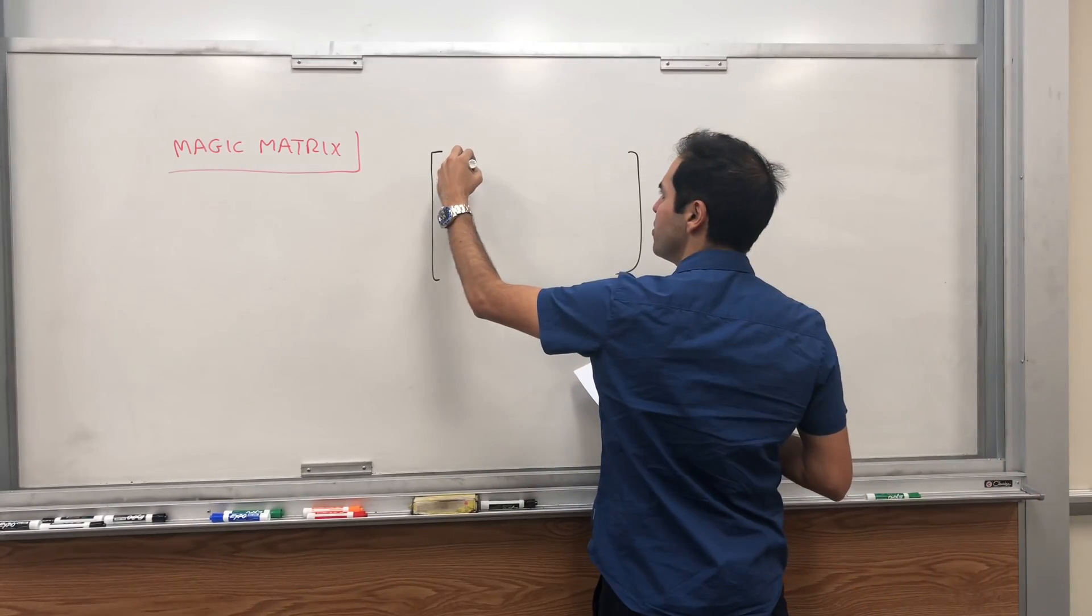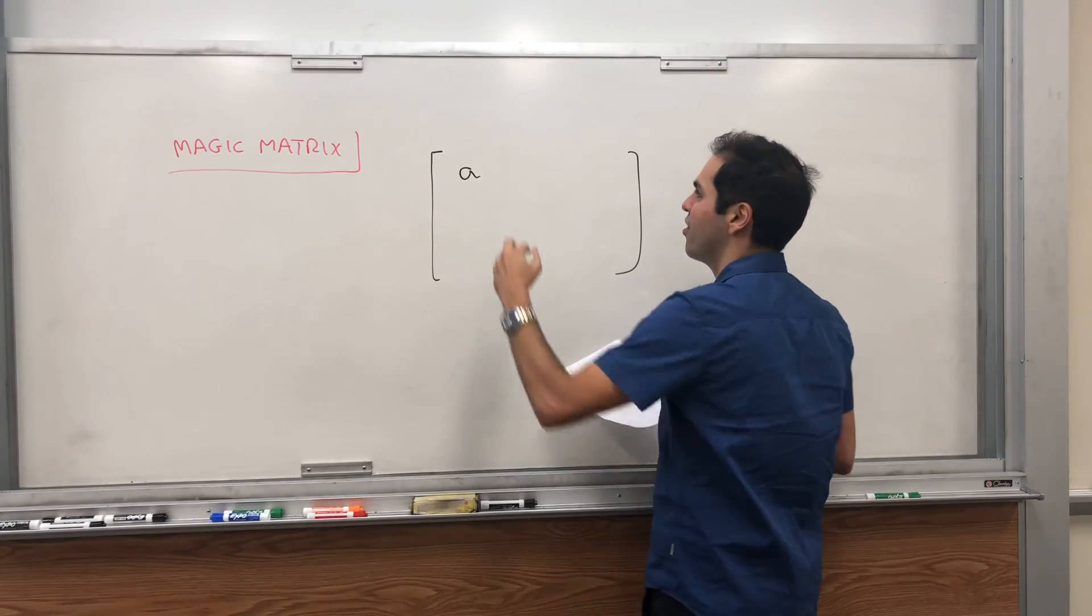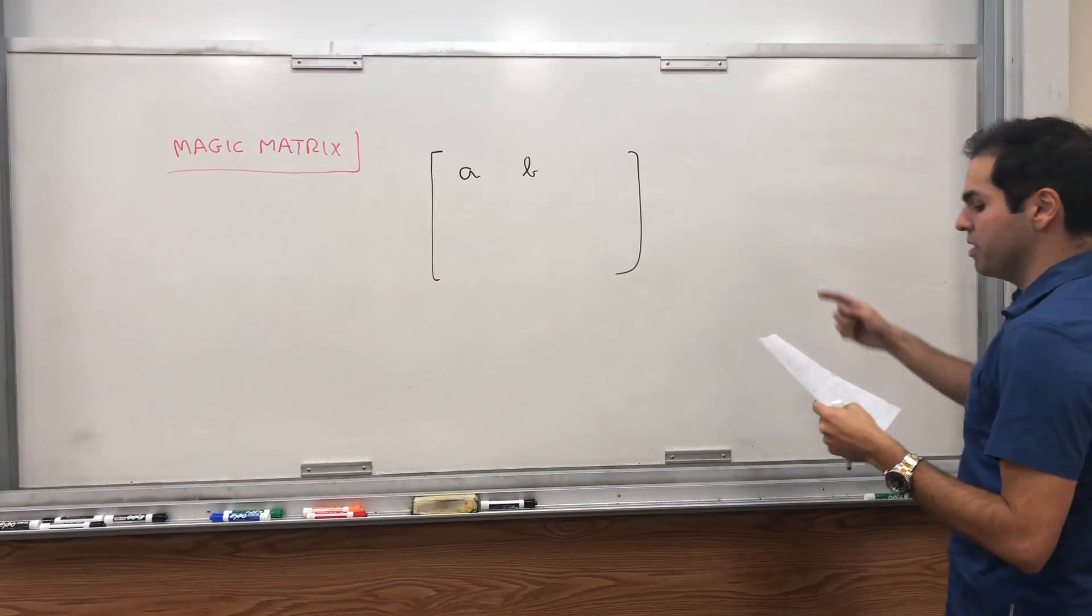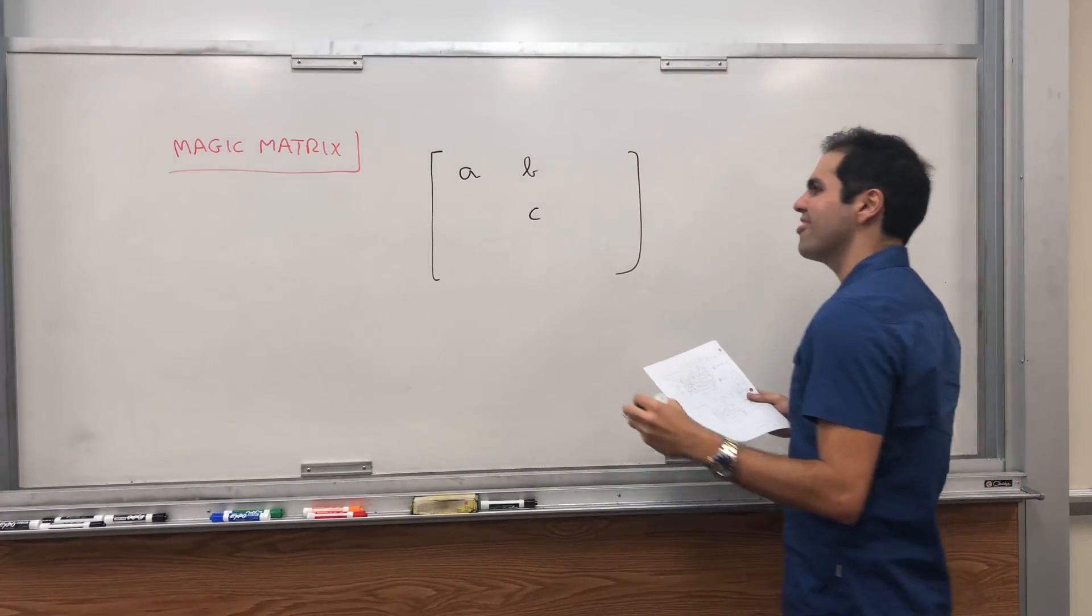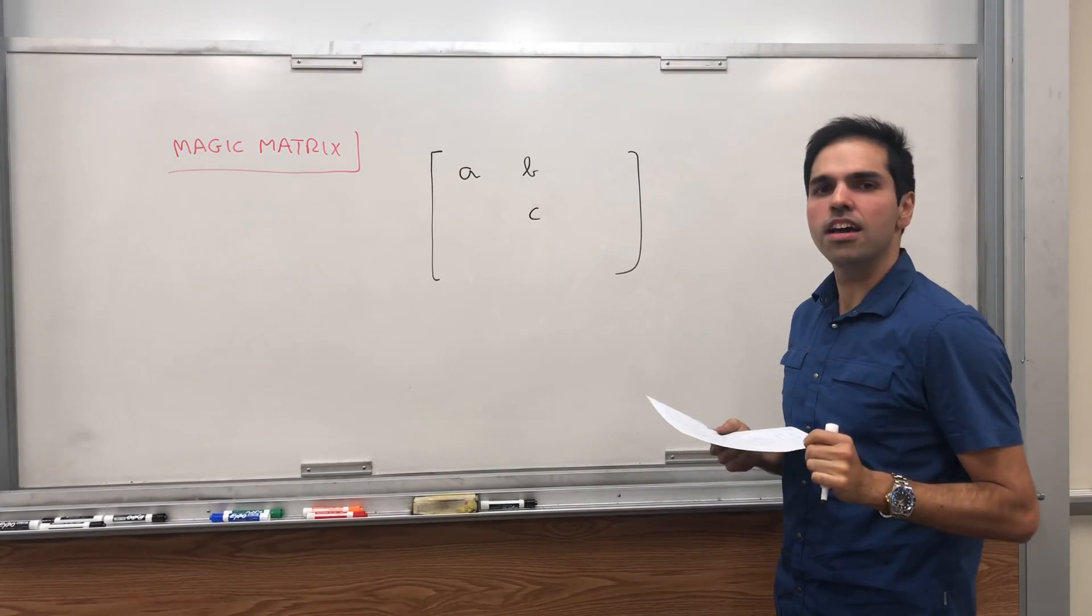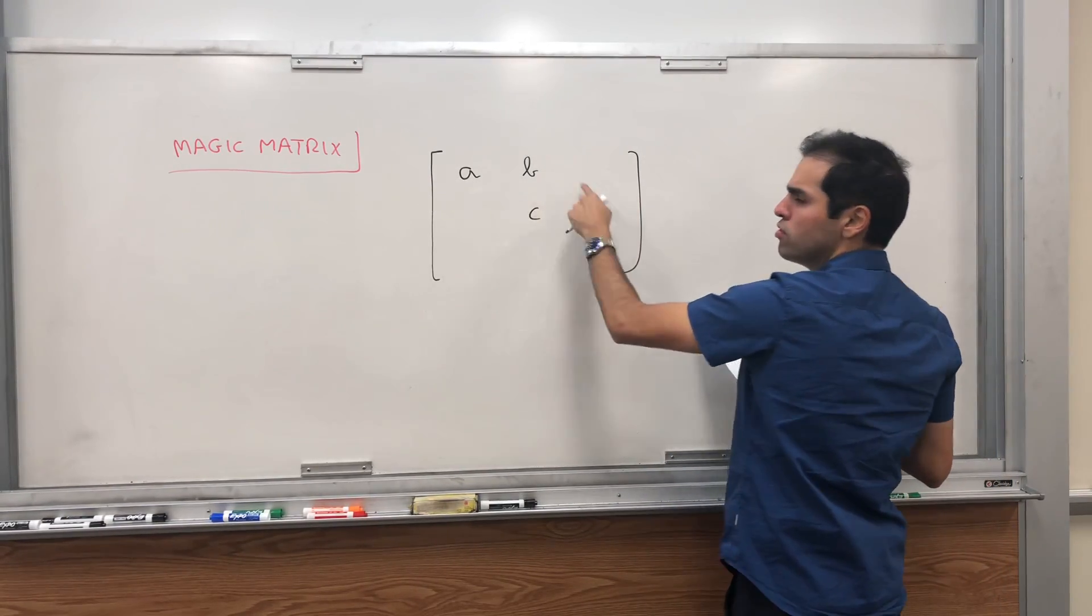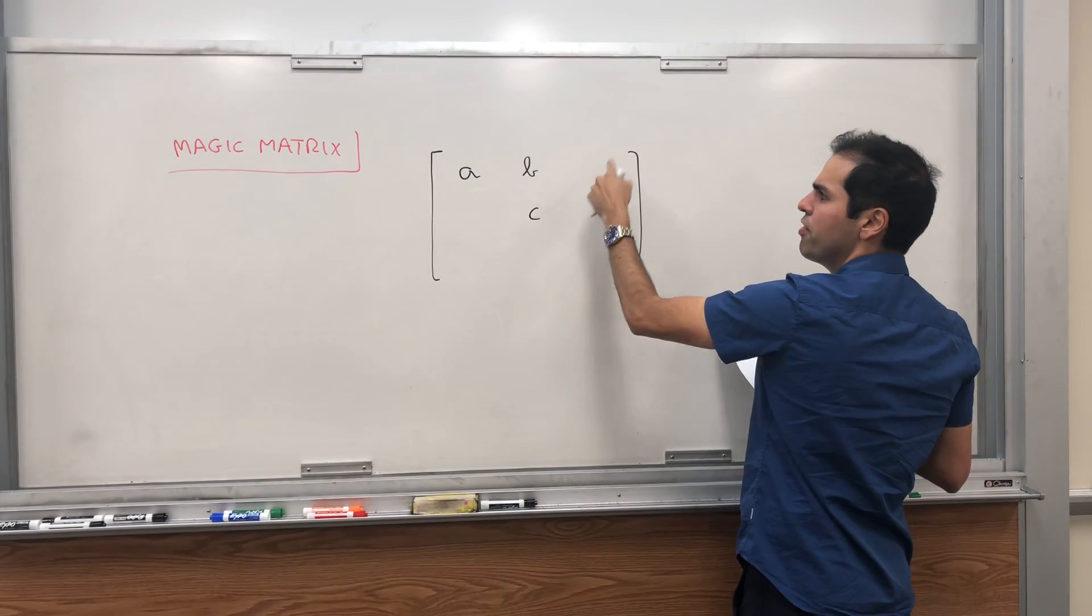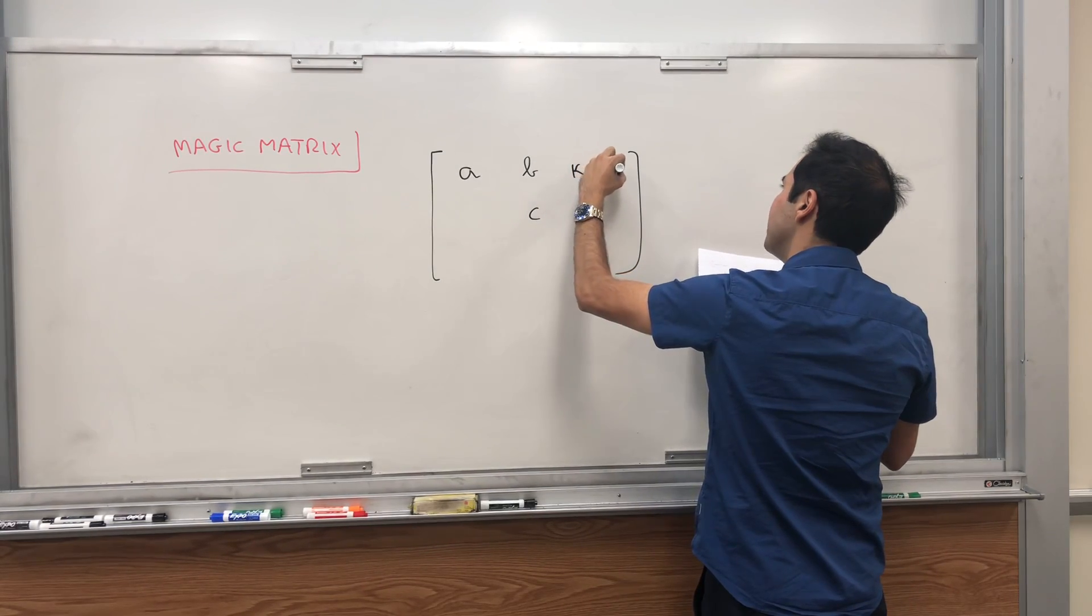Well, we have to start with something. So let a be the first entry, and then let b be the second entry, and one more entry - I promise that's all we need. Another entry c, and remember we want the sums to be a fixed constant, call this k. So first of all we need the first row to sum to k, which means that this plus this plus something equals k, so that something is k minus a minus b.